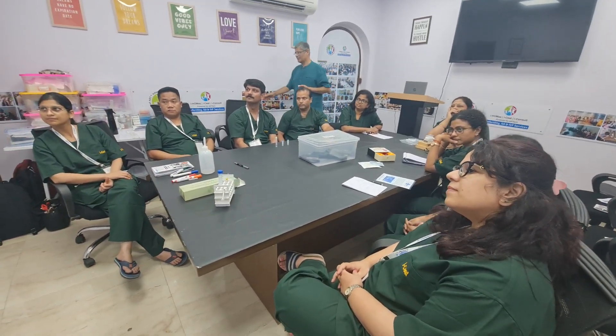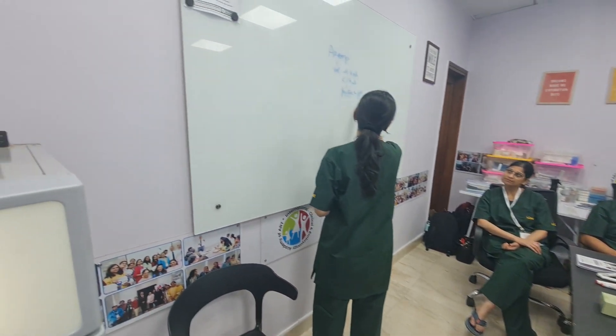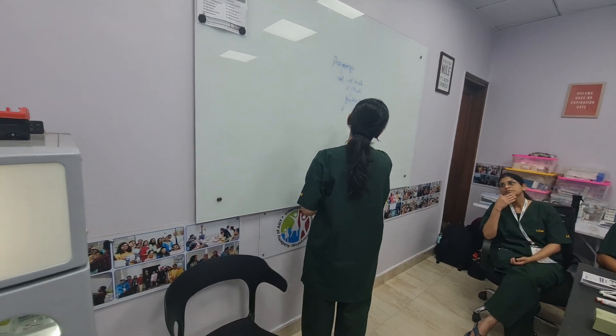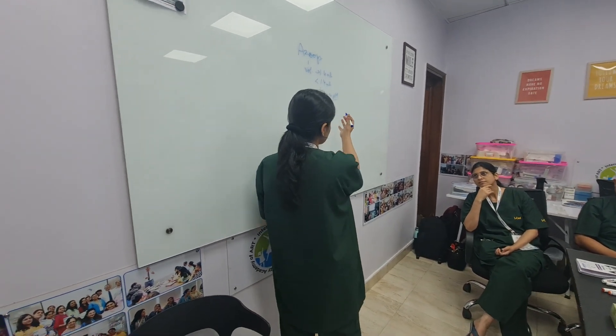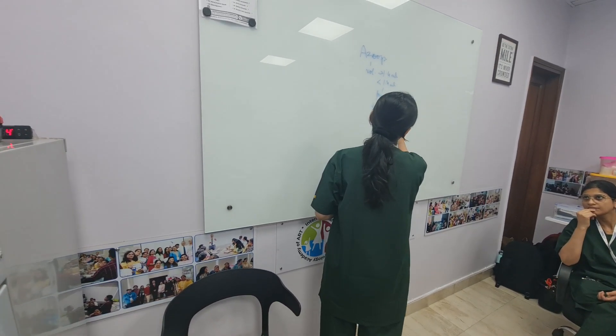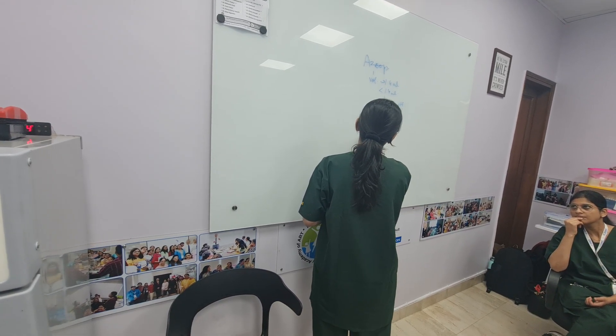As soon as we see that the volume is low, ideally we should look for fructose and the pH of the sample. Looking at the physiology, the seminal vesicle is responsible for fructose secretion and for making the pH alkaline of the semen sample. So if we find that fructose is also low and pH is also low, that means somewhere the seminal vesicle secretion is unable to reach the semen — indicating an obstruction at the level of the ejaculatory duct.